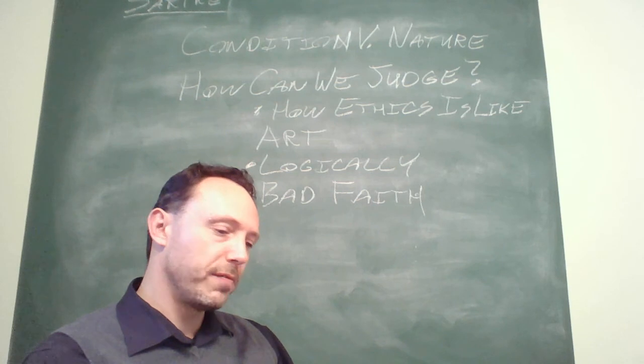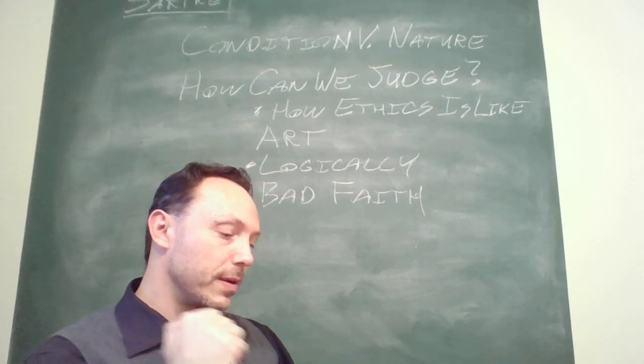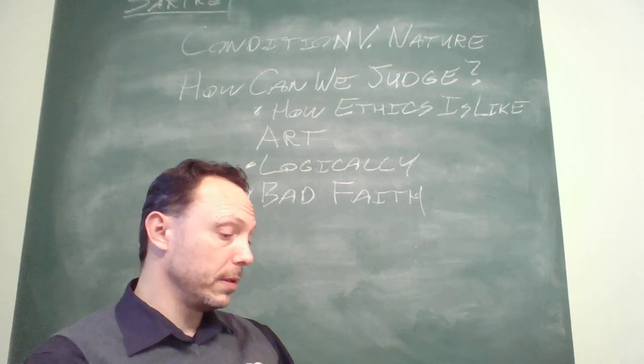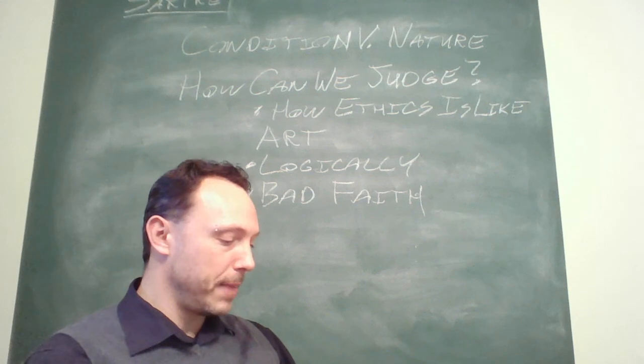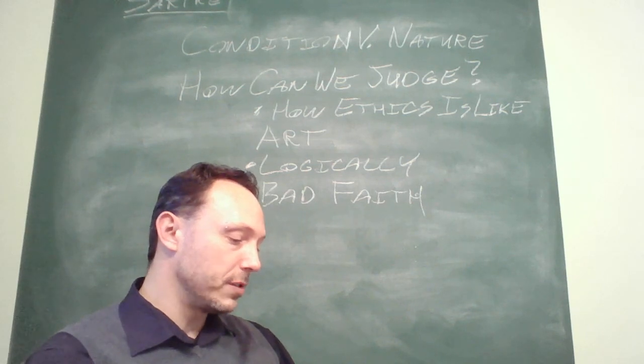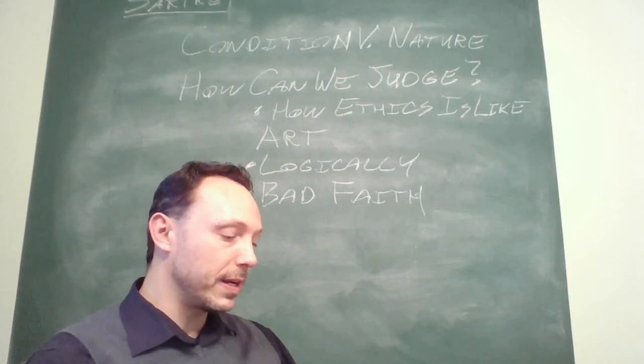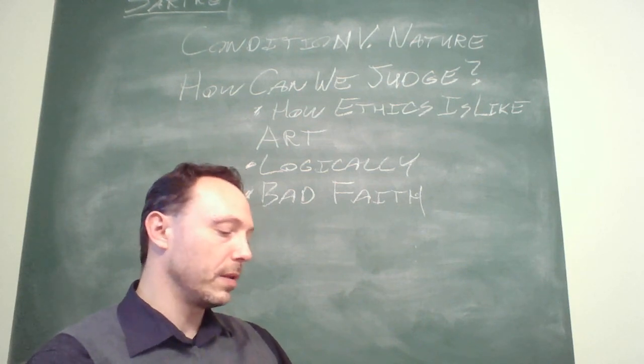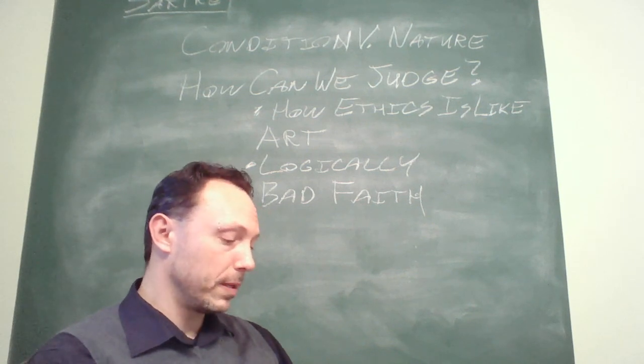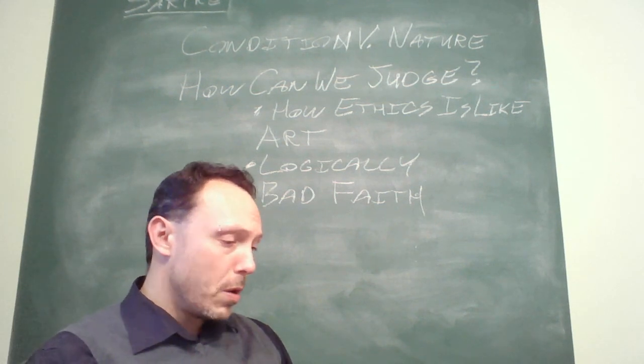I'll just read the passage quickly here. It's 42 over to 43. May I ask whether anyone has ever accused an artist who has painted a picture of not having drawn his inspiration from rules set up a priori? Has anyone ever asked what painting ought he make? It's clearly understood that there is no definite painting to be made, that the artist is engaged in the making of his painting, and that the painting to be made is precisely the painting he will have made. It is clearly understood that there are no a priori aesthetic values, but that there are values which appear subsequently in the coherence of the painting, in correspondence between what the artist intended and the result. Nobody can tell what the painting of tomorrow will be like. Painting can be judged only after it has once been made.